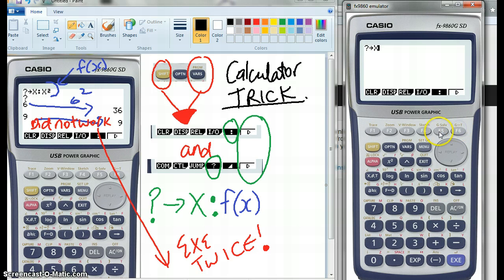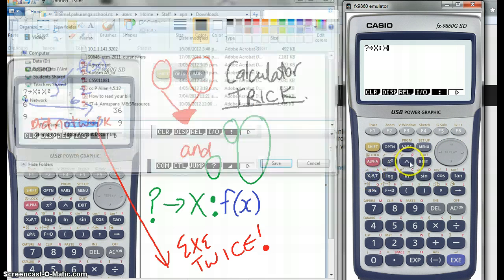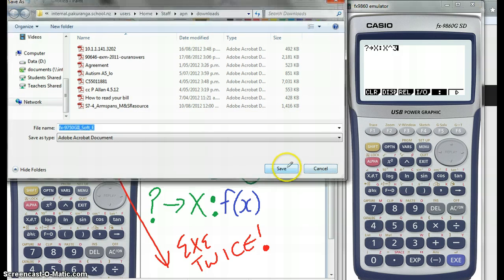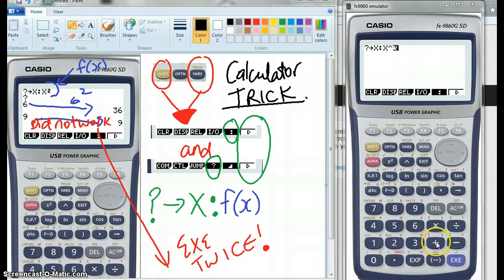And then the function of x is after the colon. So I could go x cubed plus 2x squared minus x plus 3. So a big one like that, you wouldn't necessarily want to enter a whole heap of values in one after the other.